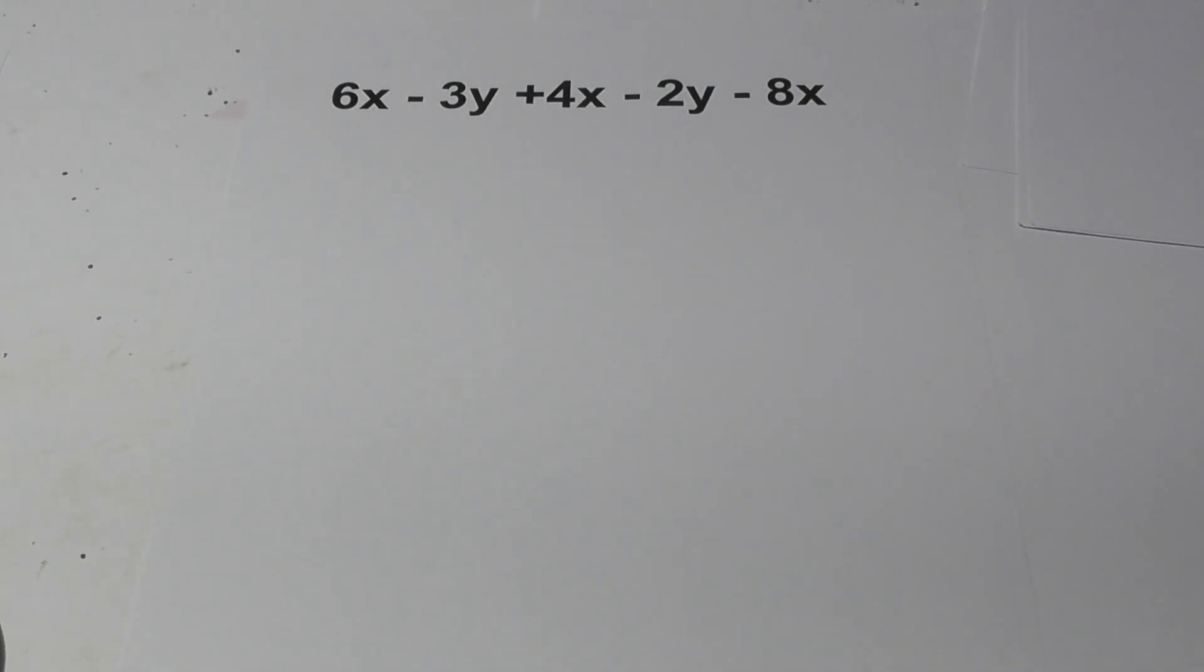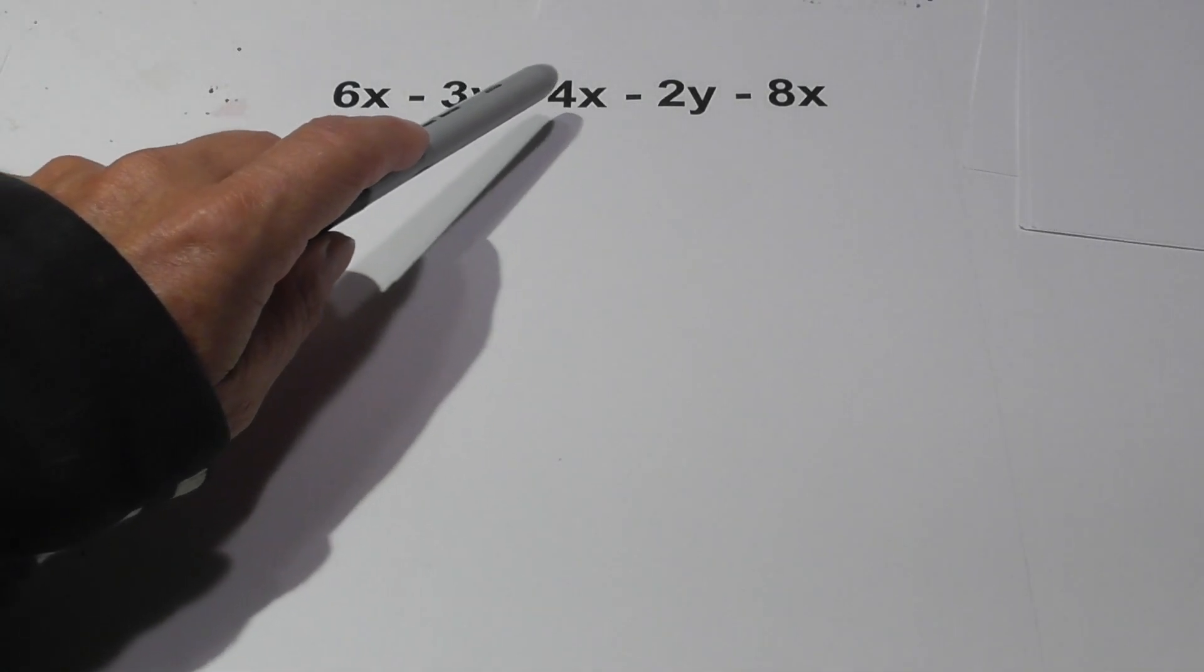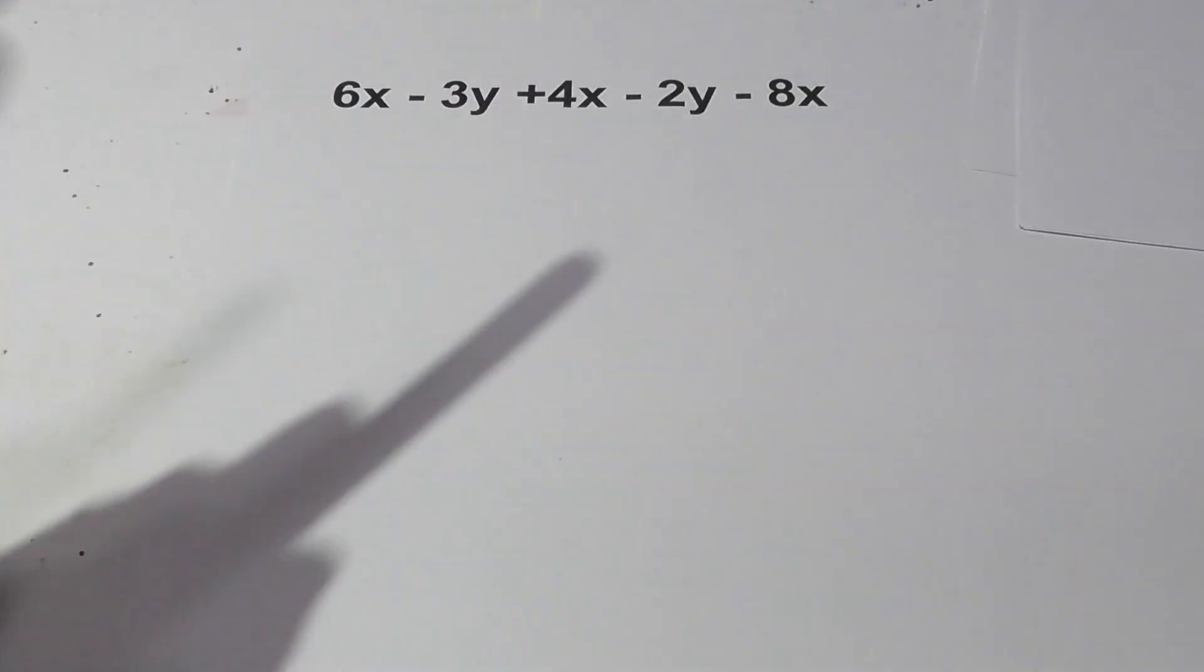Welcome to Moomoo Math and Science and Simplifying Expressions. These contain basic problems. With this problem we have 6x - 3y + 4x - 2y - 8x.